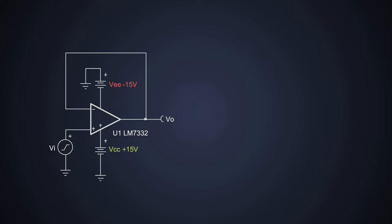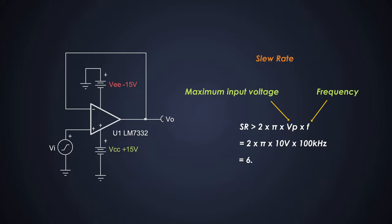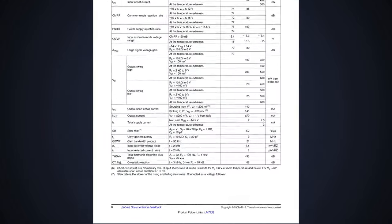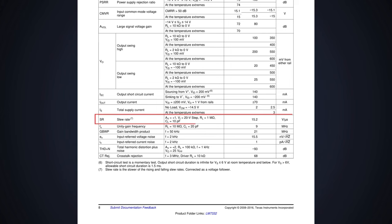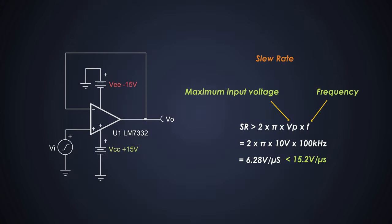We must calculate the minimum slew rate required to minimize the distortion. We can calculate it by using this formula, where Vp is the maximum input voltage and F is the signal's frequency. So the required value comes as 6.28 volts per microsecond. The slew rate of this selected op-amp is 15.2 volts per microsecond. So this is also okay for this application.